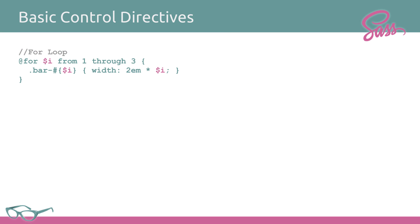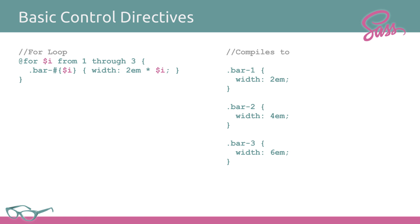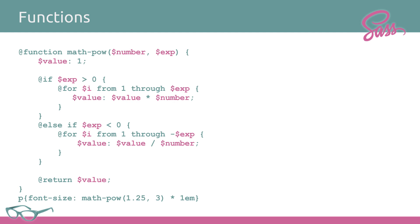The next one is the for loop. You instantiate a variable, give it a range, and can call the variable. If you want to call the variable in text, you use the pound-sign and curly-braces format. You can also do math with it. This would output as bar1, bar2, and bar3 at 2em, 4em, and 6em. You can also generate functions — for example, a function to calculate whole-number powers, used here to create a font size that is 25% larger, scaled three times, then multiplied by 1em to give the em extension, resulting in 1.95312em.